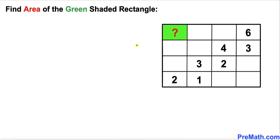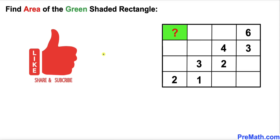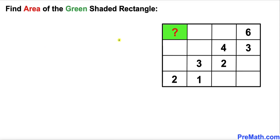Welcome to Pre-Math. In this video we have a 4 by 4 grid where the areas in these boxes are 2, 1, 3, 2, 4, 3, and 6 respectively. We are going to calculate the area of this green rectangle. Please don't forget to give a thumbs up and subscribe.